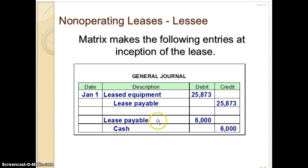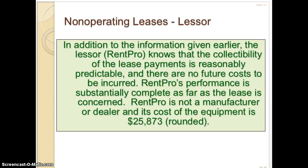Their first payment of $6,000 — since you need to make a payment on the first day of the lease, January 1st — no interest has accrued yet. So you've got a debit to lease payable and a credit to cash. On the lessor side, remember they have two additional criteria: whether it is a direct financing lease or a sales type lease. RentPro knows the collectability of the lease payments is reasonably predictable, and there are no future costs to be incurred.